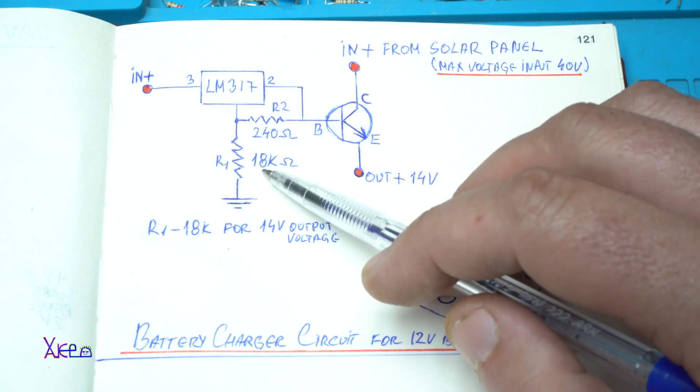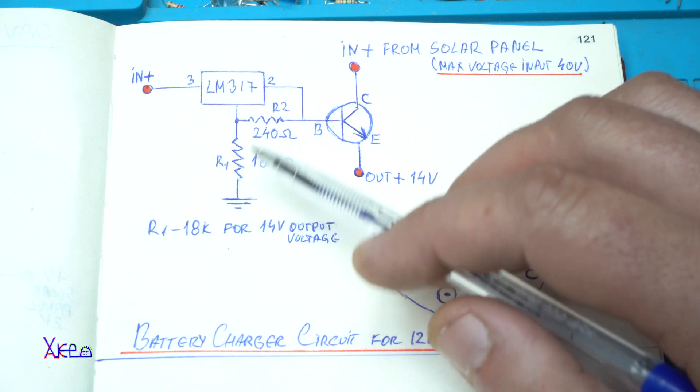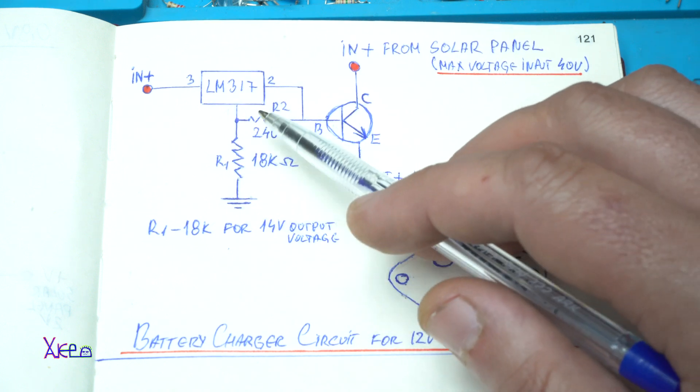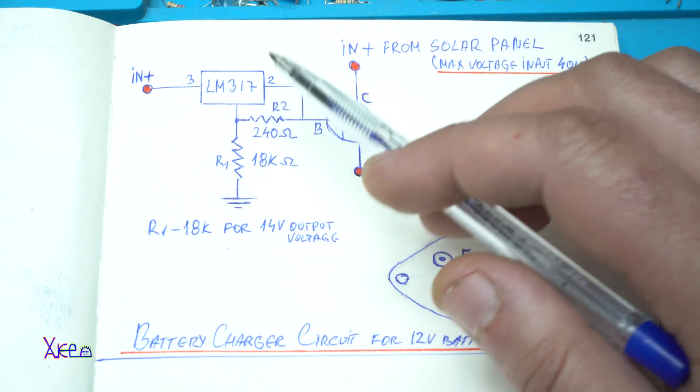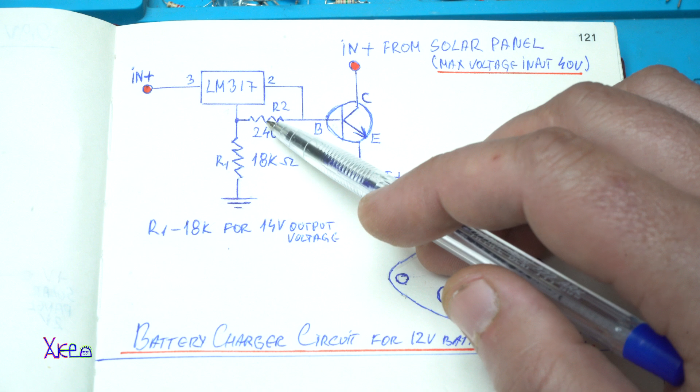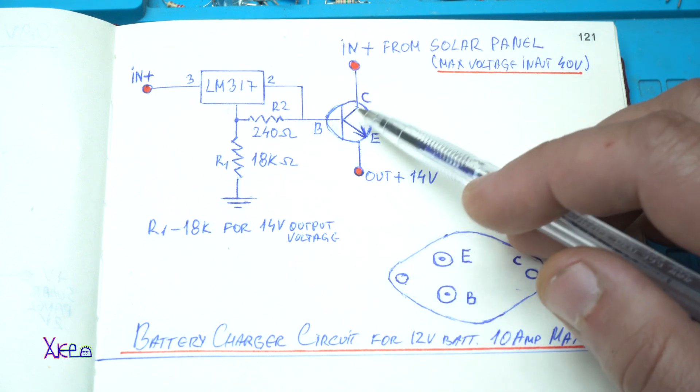And this is an 18 kilo ohm resistor for setting up the voltage regulator to 14 volts output. When we have 14 volts output we trigger the base of the N-P-N transistor.